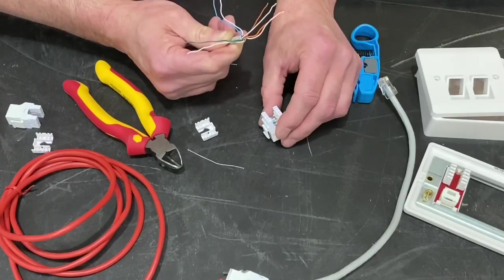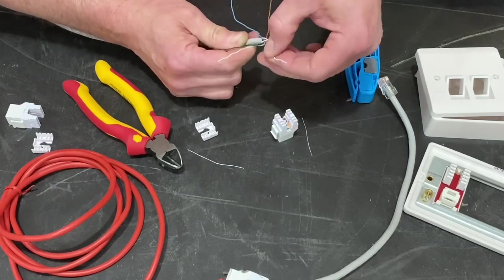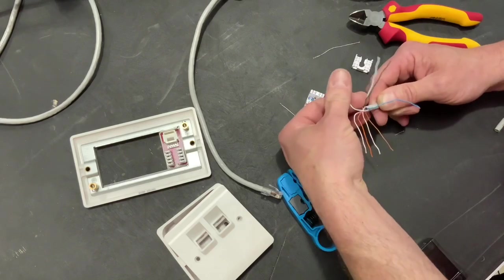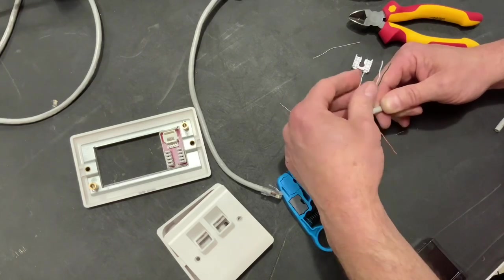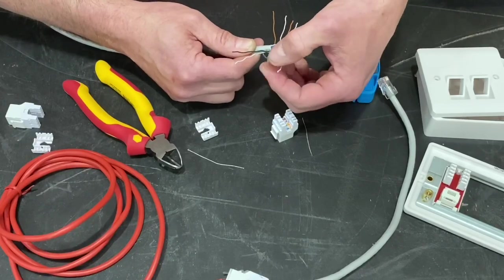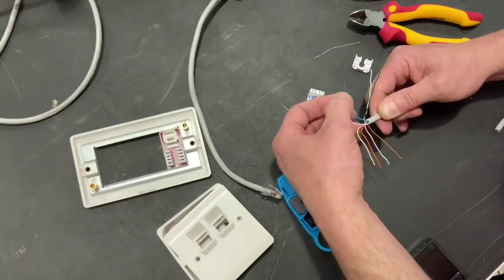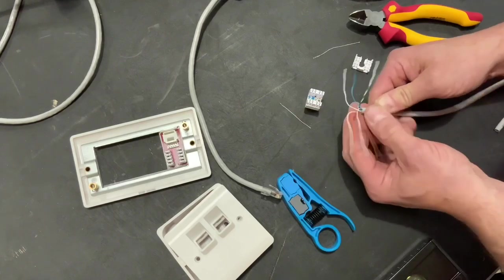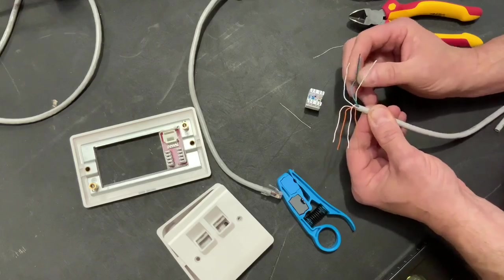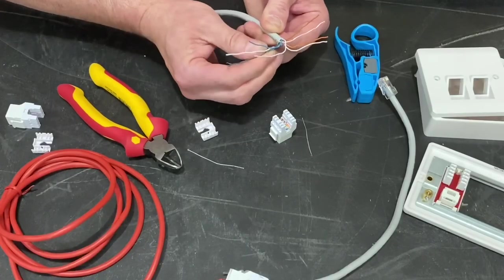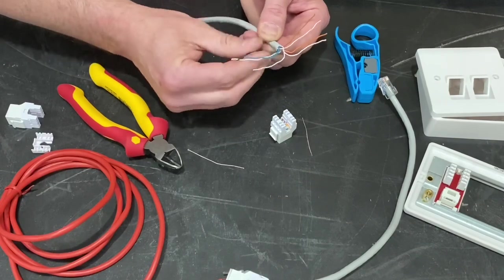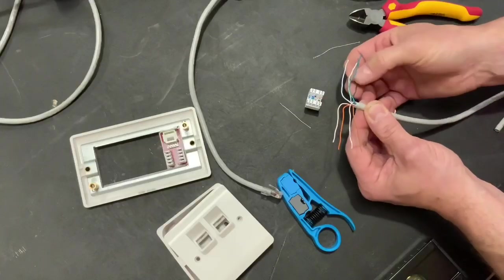Then on the other side I go white and blue, followed by blue. It's worth just taking a few moments just to lay them out as best you can before putting them in. So we go white and blue, blue, followed by white and green and then finally green. So we're trying to lay those out as best we can.